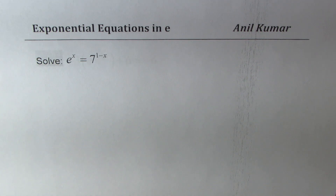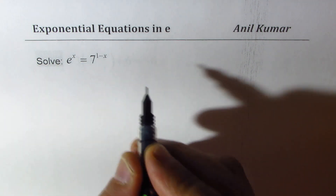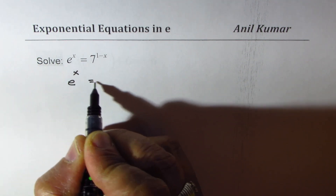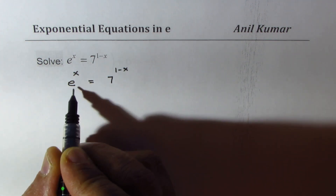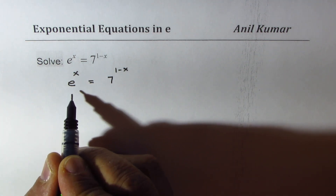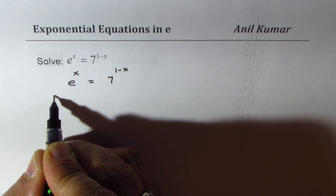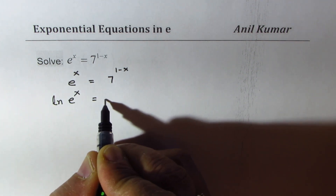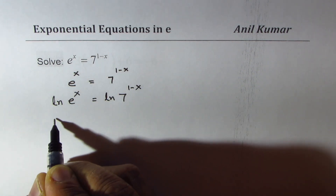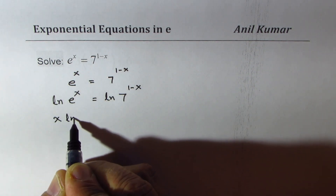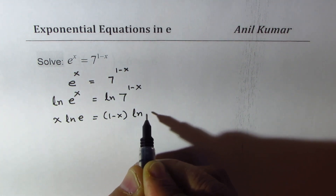We have e to the power of x equals 7 to the power of 1 minus x. Whenever exponential equations involving e are present, we take natural log on both sides. So we get ln(e^x) equals ln(7^(1-x)), which gives us x·ln(e) equals (1 minus x)·ln(7).